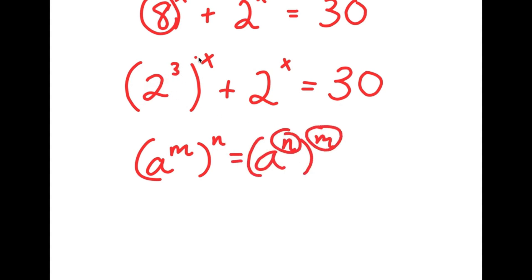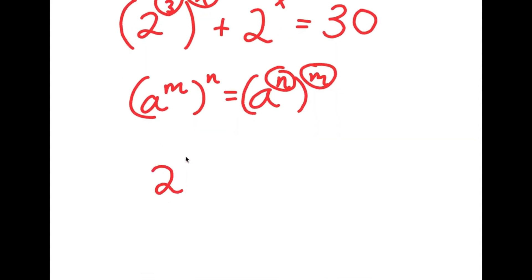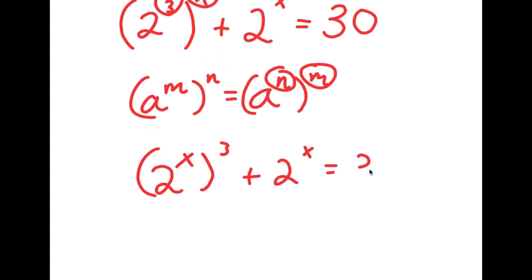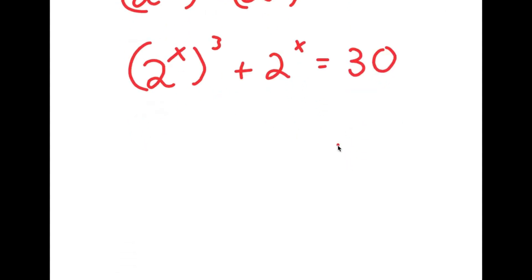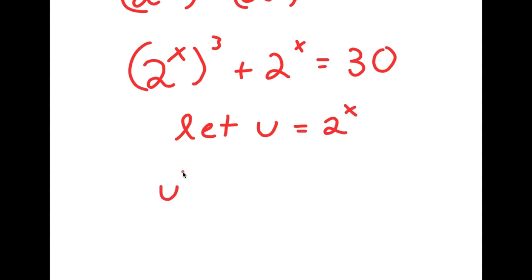If I have something in the form a to the power of m to the power of n, this is the same thing as a to the power of n to the power of m — I can switch the places of n and m. So I switch 3 and x, giving 2 to the power of x to the power of 3 plus 2 to the power of x equals 30. I'm going to let the variable u equal 2 to the power of x. Substituting in u, I get u to the power of 3 plus u is equal to 30.